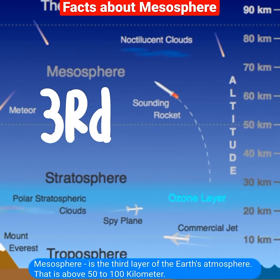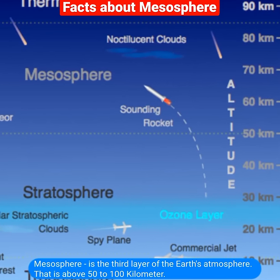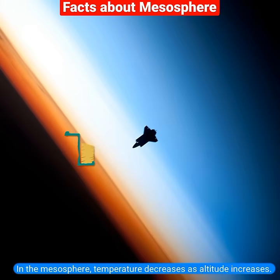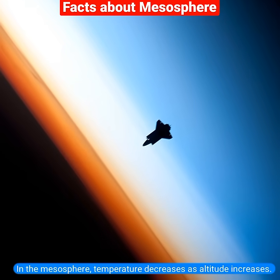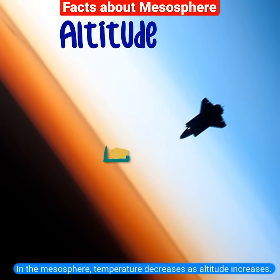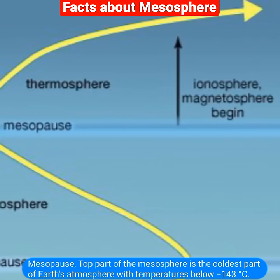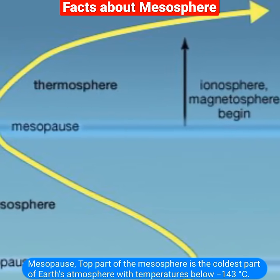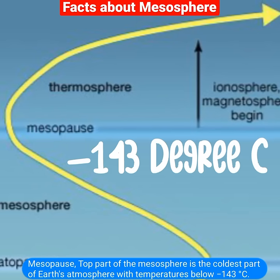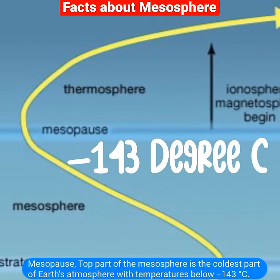Mesosphere is the third layer of the atmosphere, located above 50 to 100 km. In the mesosphere, temperature decreases as altitude increases. The mesopause, the top part of the mesosphere, is the coldest part of Earth's atmosphere, with temperatures below minus 143 degrees Celsius.